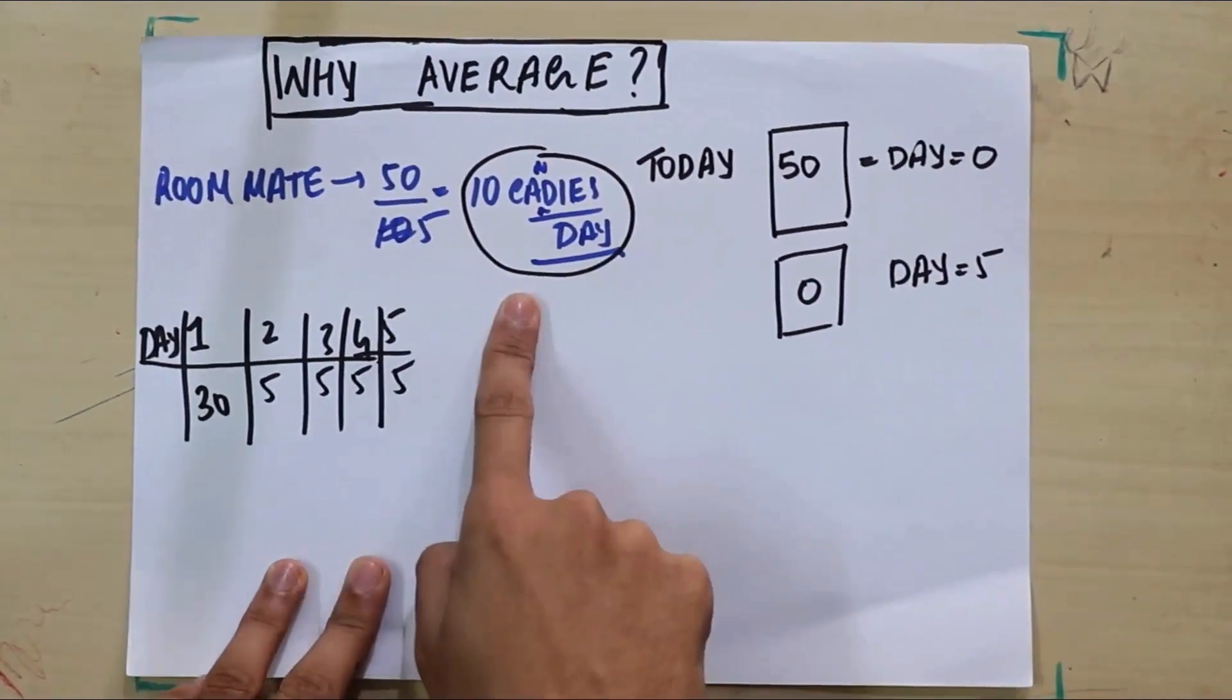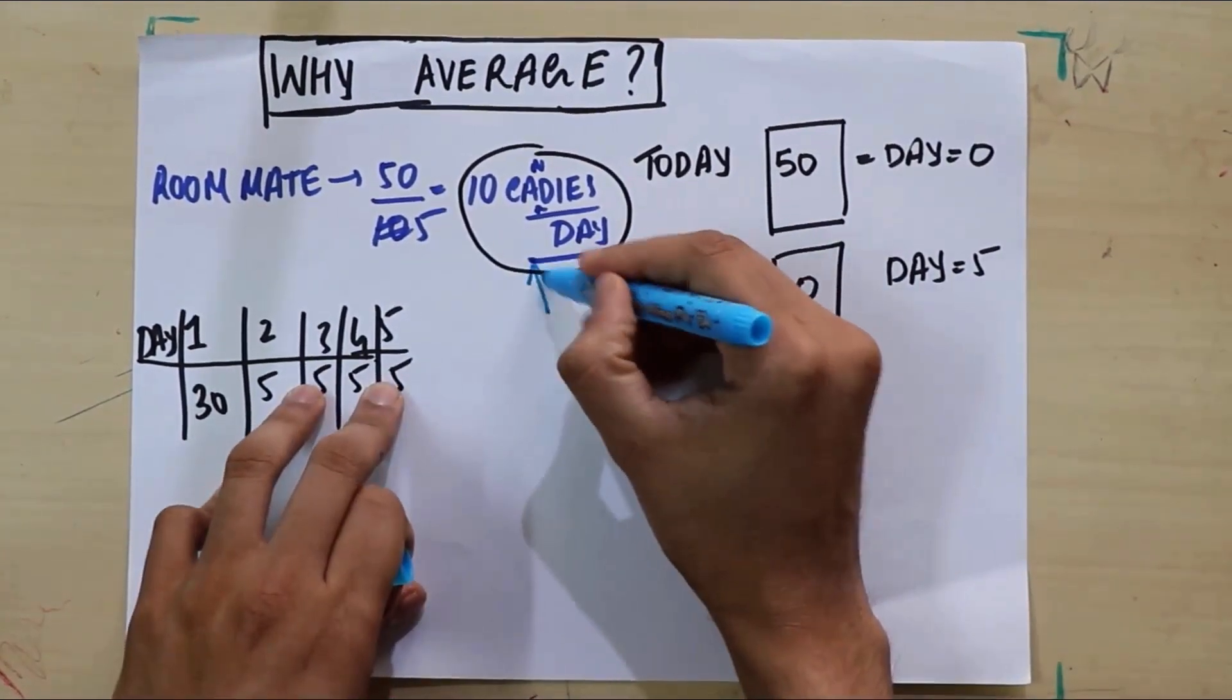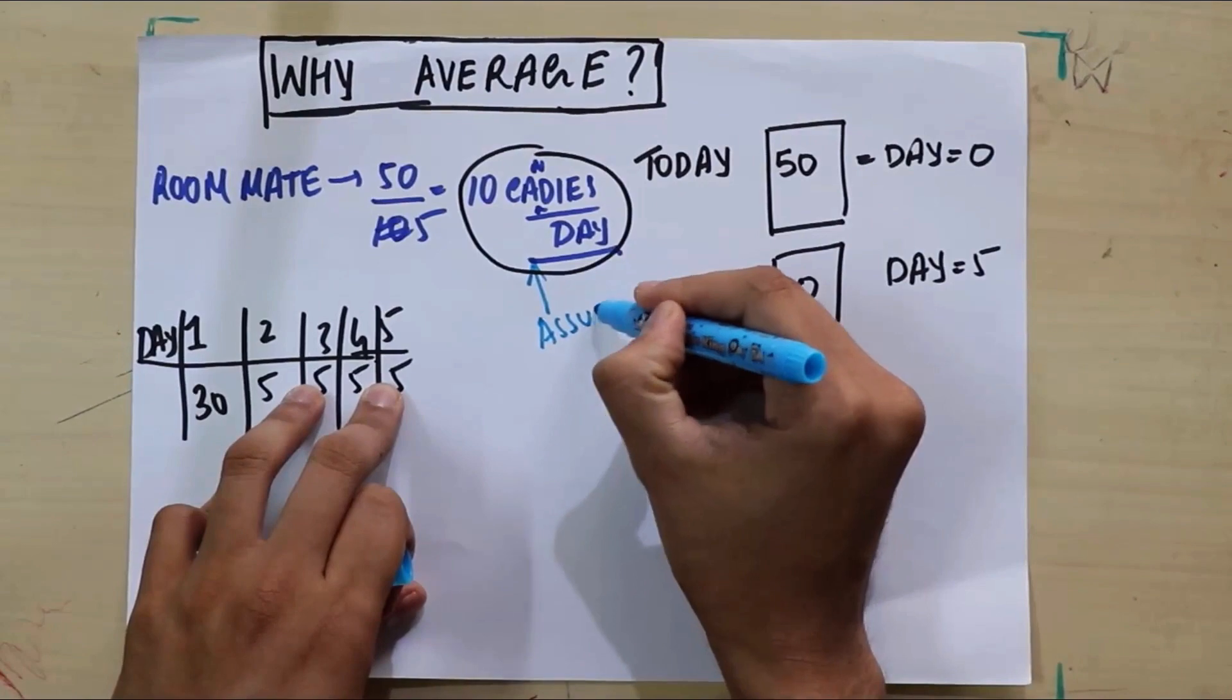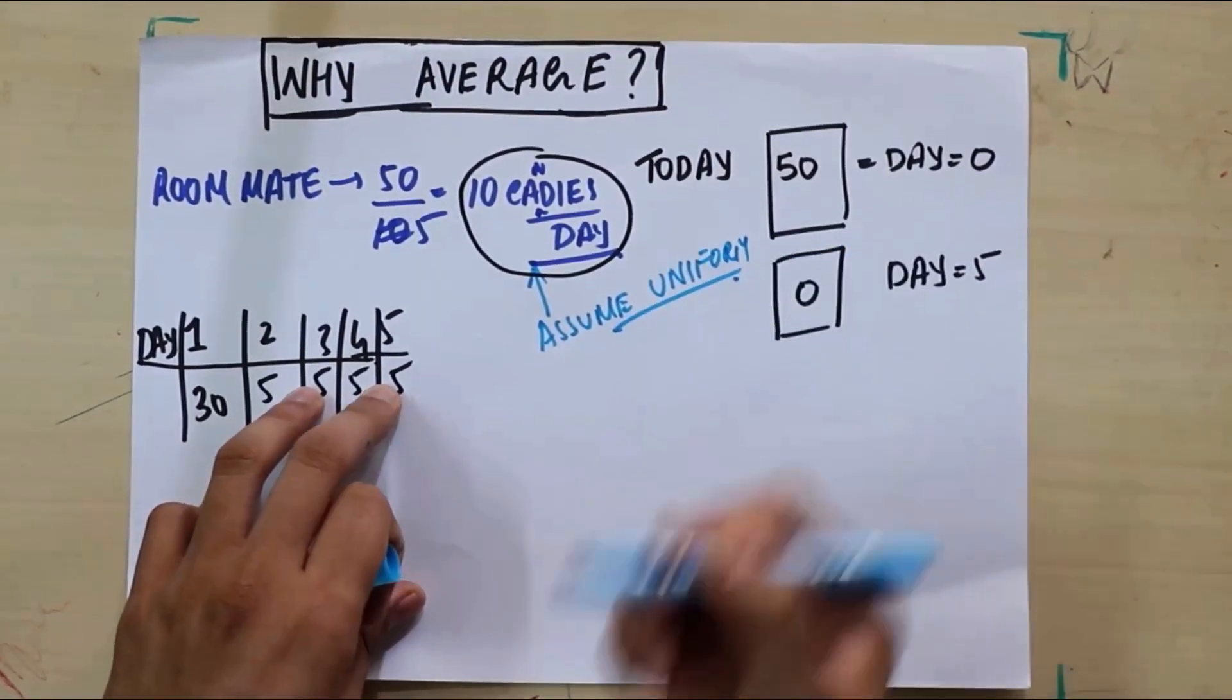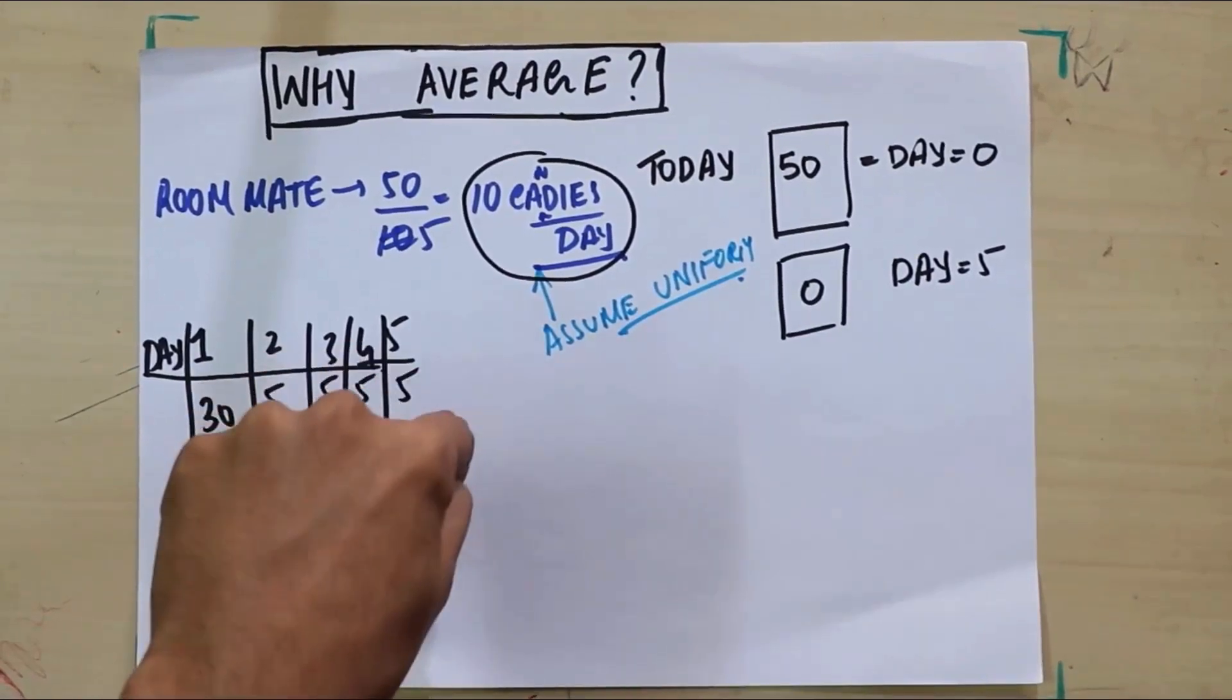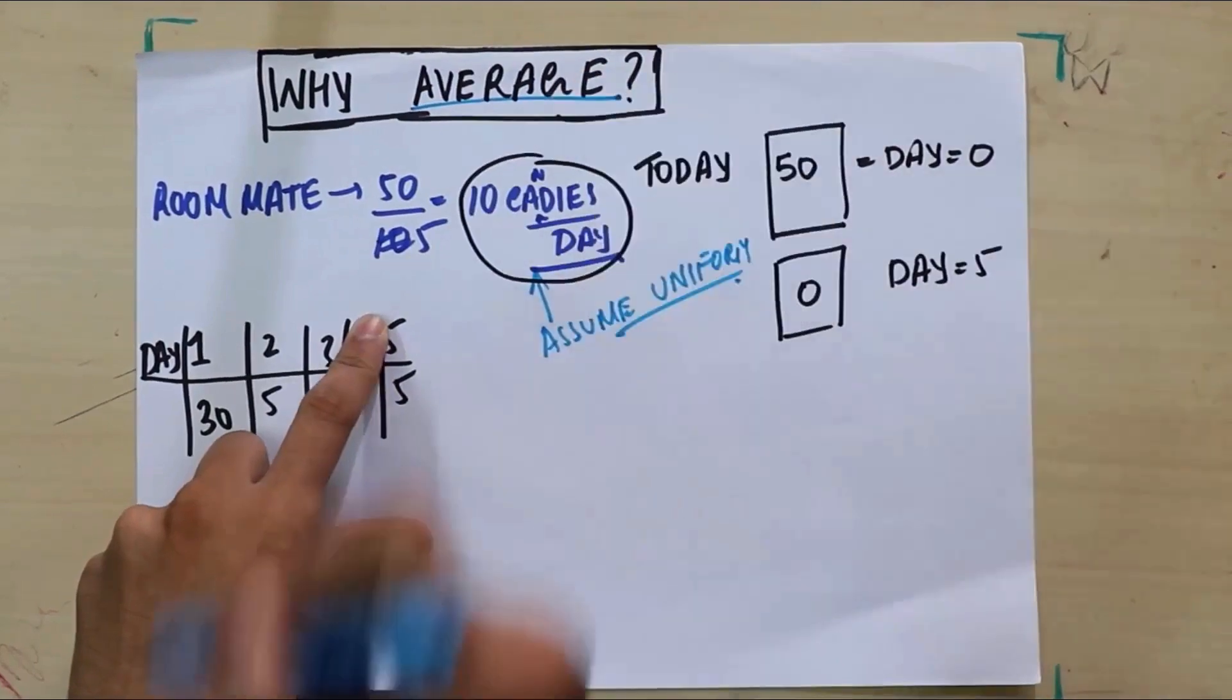So this is under the assumption. We assume uniformity. When you do a calculation where you assume something is happening uniformly, that's when we call it an average value, because in reality it may not have happened that way.